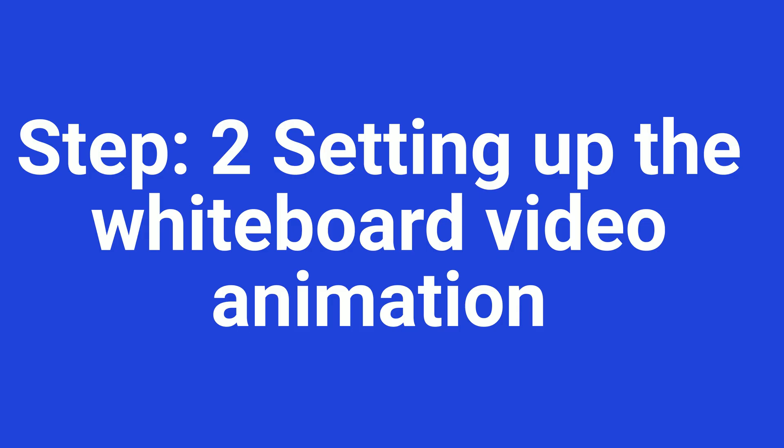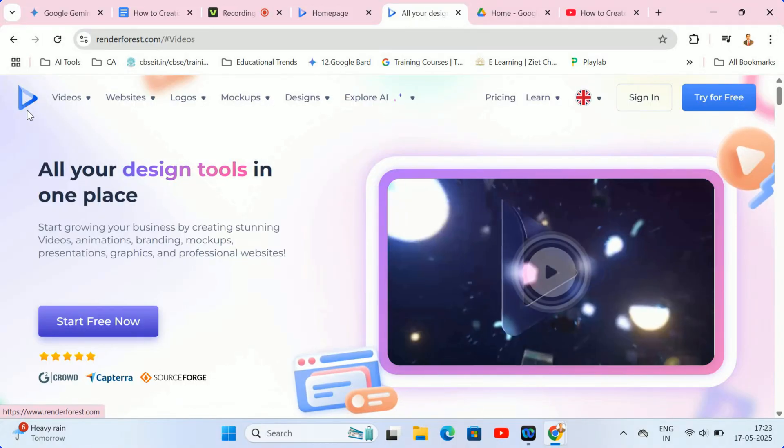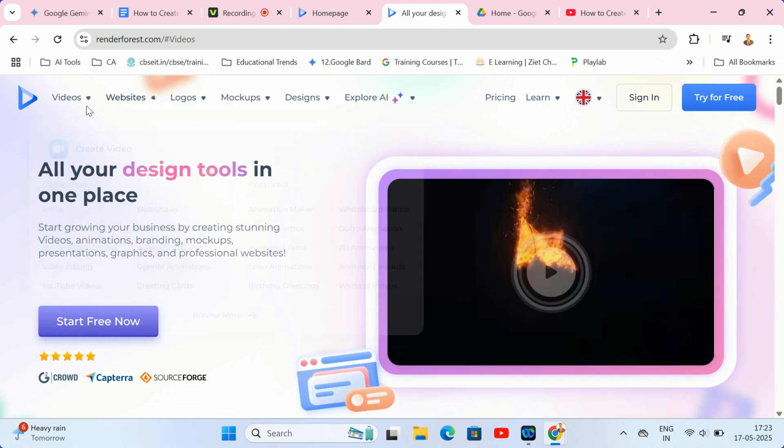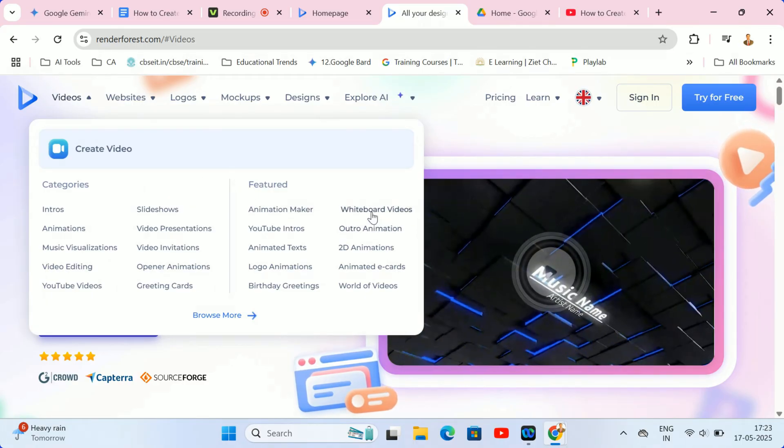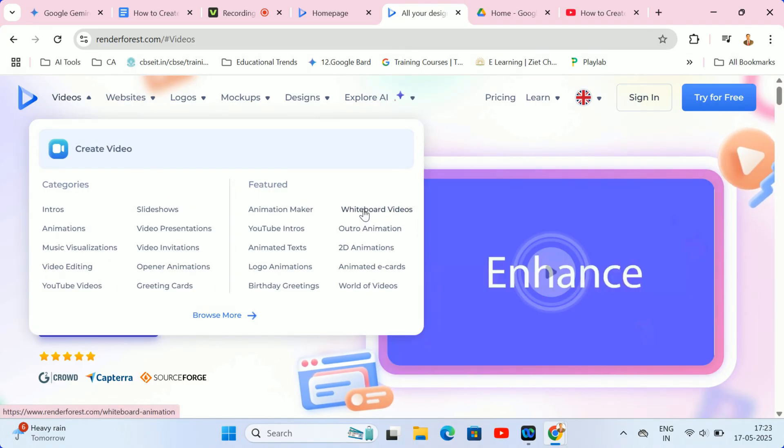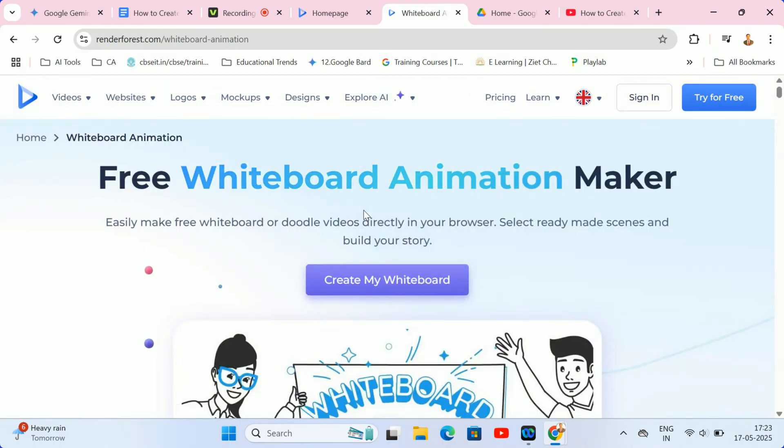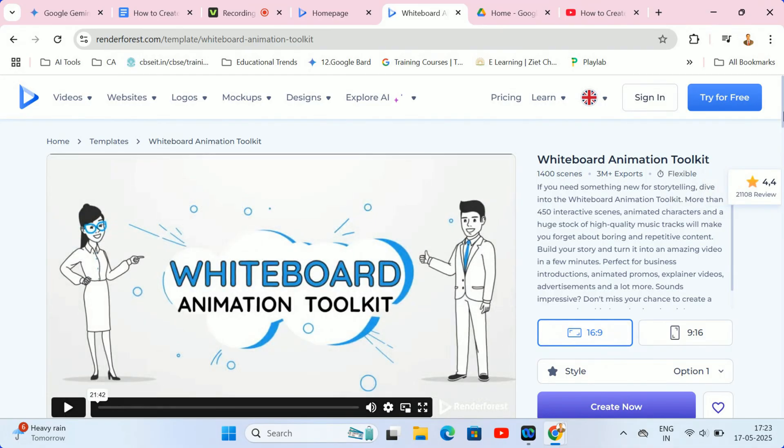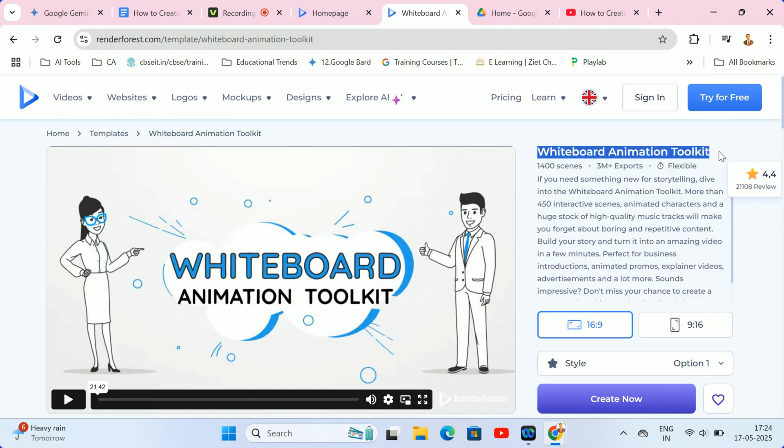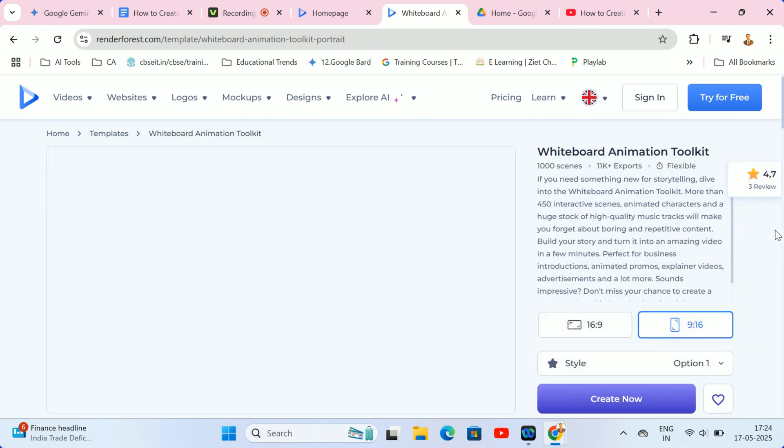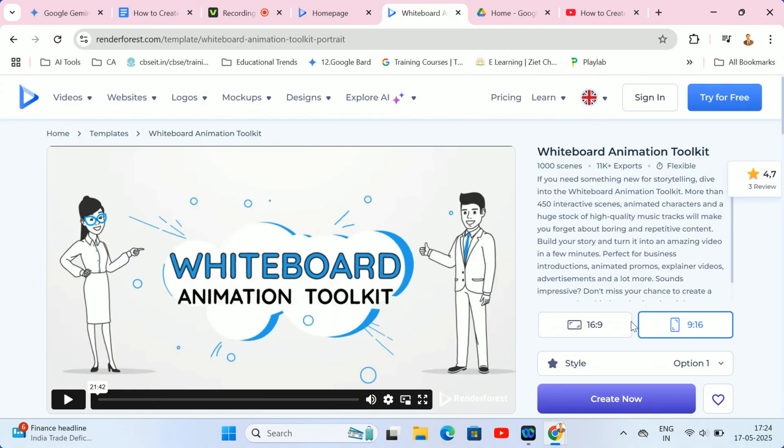Next step 2. Setting up the whiteboard video animation. Alright, you've signed up. Fantastic. Now, let's get into the creative heart of Renderforest. First, you'll want to click on the Video tab. Within that section, look for and select Whiteboard Videos. Next, to start your own unique project from scratch, click on Create My Whiteboard. This will open up the customization options. Here you can define your video's aspect ratio, whether you need it in portrait mode for platforms like TikTok and Instagram Reels, or landscape for YouTube and presentations.